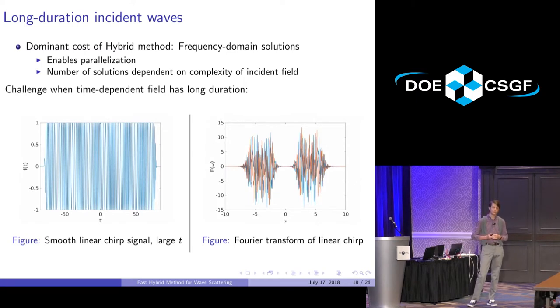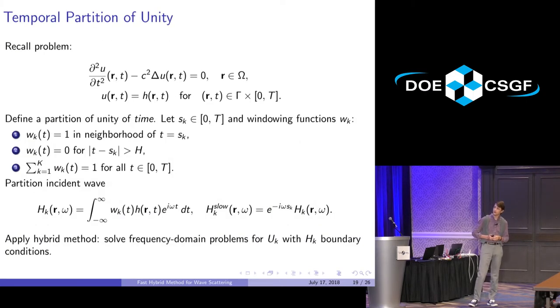There is a problem for long-duration incident waves. Basically, the Fourier transform becomes highly oscillatory when you have long times, and you get something like this Fourier transform which would be very expensive to discretize.